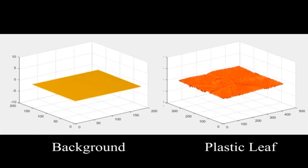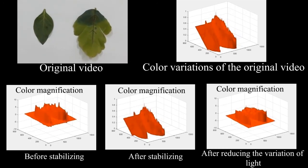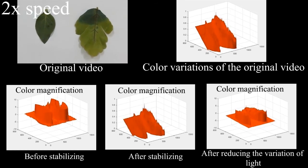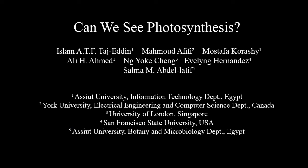By stabilizing the video and reducing the influence of illumination variation in the environment, we can get better results in observing the color changes of our subjects and are hence better able to visually study photosynthesis.